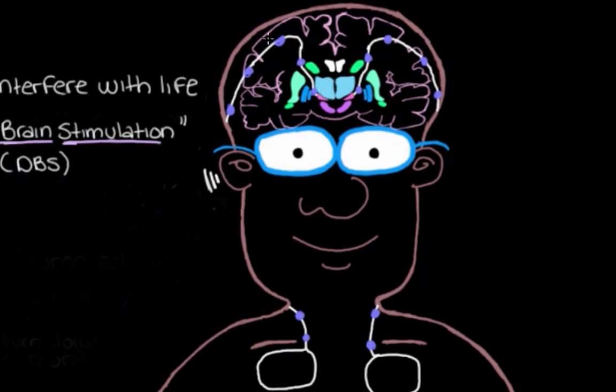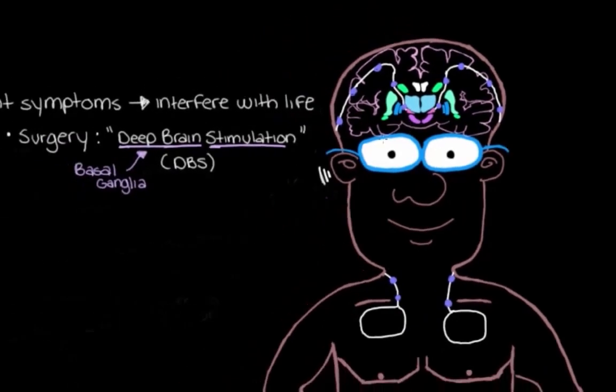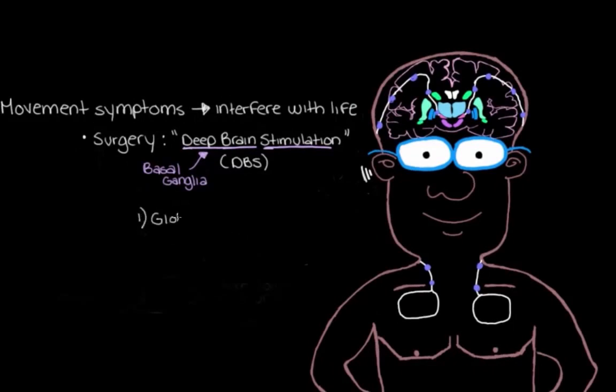so that it can't talk to the motor cortex properly. So right away we can probably see that the globus pallidus internal is definitely one of those problem-causing areas in Parkinson's disease because it's too active. It's inhibiting the thalamus too much. And another area that we can probably see as a problem-causing area is the subthalamic nucleus, because it's the one that's getting too active and overexciting the globus pallidus internal in the first place.